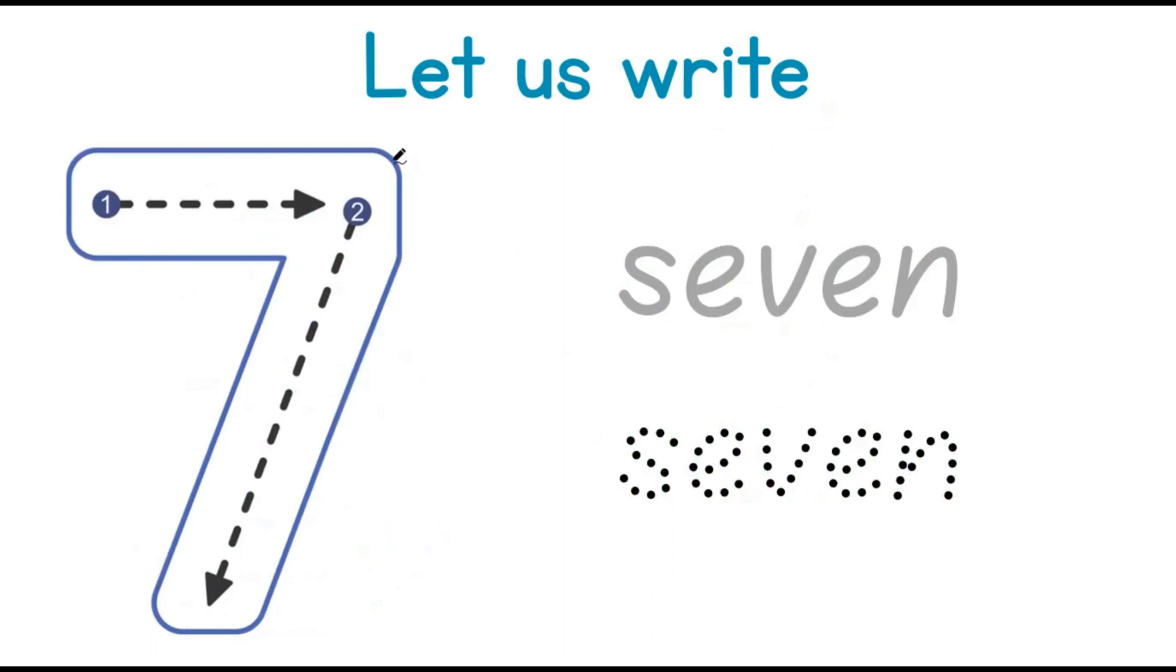Let us write the number seven. This is how we write the number seven. One, two. And this is how we write the word seven. S, E, V, E, N spells the word seven.